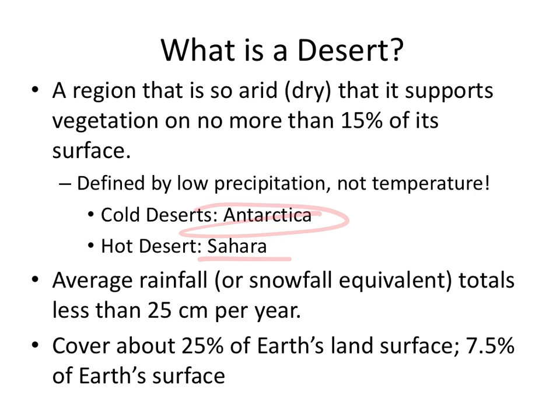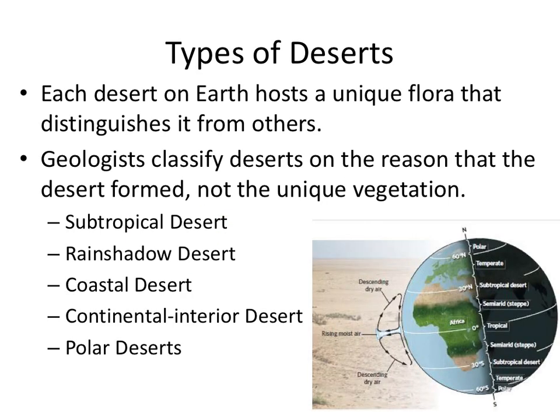What we're going to do today is actually break down the five types of deserts: the subtropical desert, the rain shadow desert, the coastal desert, the continental interior desert, and then the polar desert.